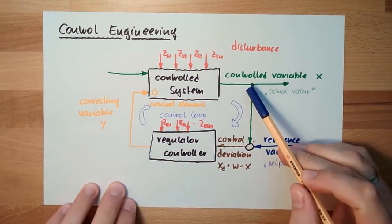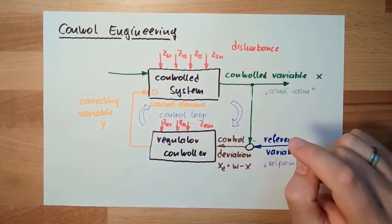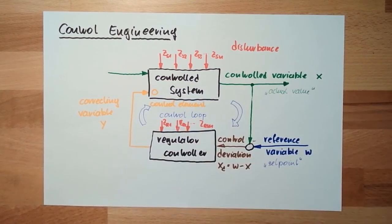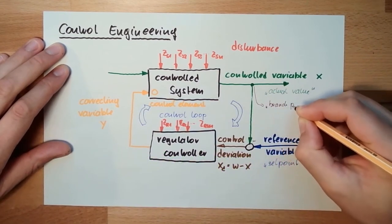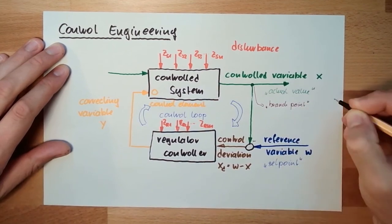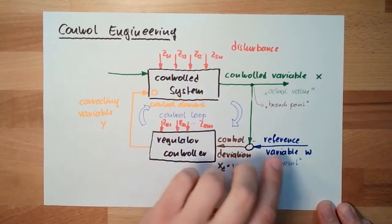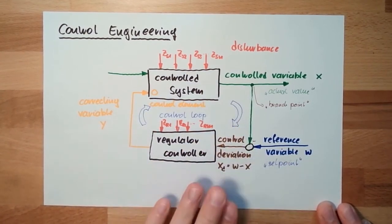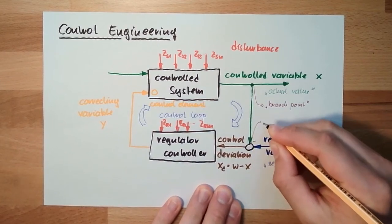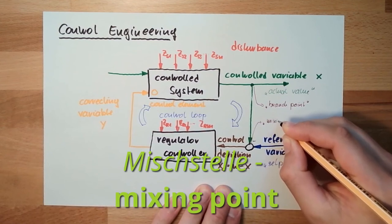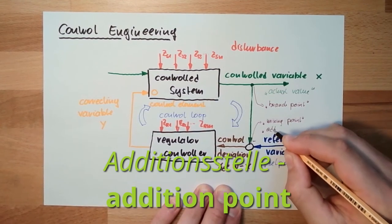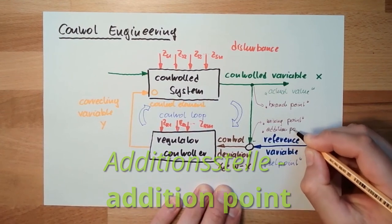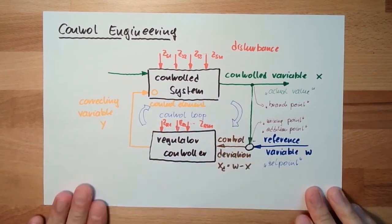Such things where we divide a signal are called a branch point. And such things where we mix or add two or more signals together — this is called a mixing point, or also an addition point. Even if it's a subtraction, it's still called an addition point. So these are the terms.